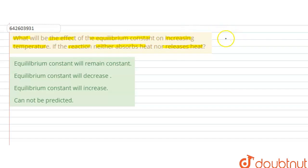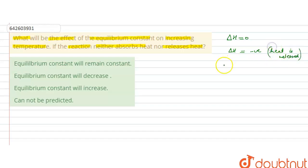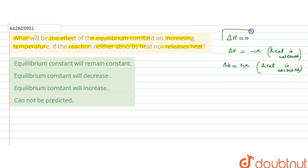So if the reaction neither absorbs nor releases heat, it means ΔH will be 0. Because if the heat is released then ΔH is negative, and ΔH is positive when heat is absorbed. But in the question it is given that the reaction neither absorbs nor releases heat, so ΔH will be 0.